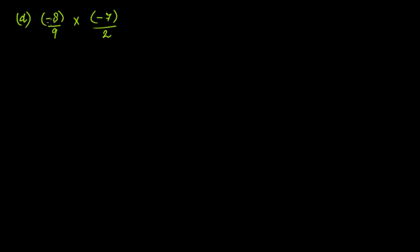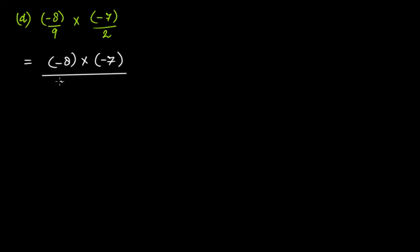Here you have minus 8 over 9 times minus 7 over 2. So minus 8 times minus 7 — that is the multiplication of numerators together — and then 9 times 2 — the multiplication of denominators together — and you get 56 over 18.